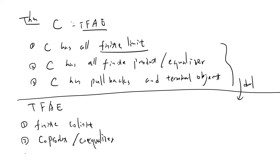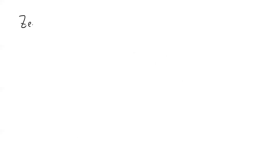Category theory is very interesting — pushout is the dual of pullback, and the terminal object is the dual of the initial object. Now let's talk about zero morphisms.